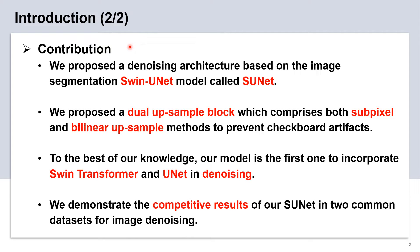The contributions of this paper can be summarized as follows. First, we propose a denoising architecture improved from the image segmentation Swin-UNet model, called SU-Net. Second, we propose a new up-sampling method which comprises both sub-pixel and bilinear interpolation to prevent checkerboard artifacts. Third, to the best of our knowledge, our model is the first one to incorporate Swin Transformer and U-Net in denoising, and we demonstrate competitive results on both quantitative scores and visual results.